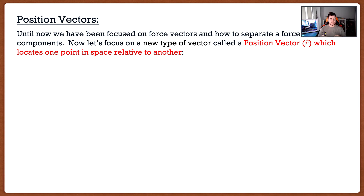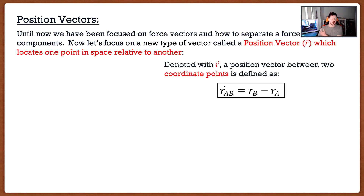Position vectors — we have to discuss what exactly they are. A position vector locates one point in space relative to another. It's denoted as R with a little arrow, so it's a vector, and it's a position vector between two coordinate points. If I want a position vector between two points, I need to know the coordinates of those two points. All I'm going to do is take the coordinates of where I end up minus my initial coordinates.